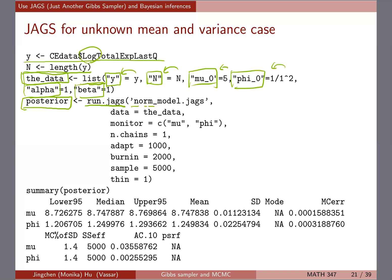Then you run the sampler and store results in an object called posterior using the function run.jags. You pass in the normal model string, the data, and the monitor argument — which specifies which parameters you want to track. Here, monitor includes mu and phi. You're running one Gibbs sampler chain. The various arguments like adapt, burnin, and sample control the number of iterations; together they total a thousand iterations. I'll talk about those details in a minute.